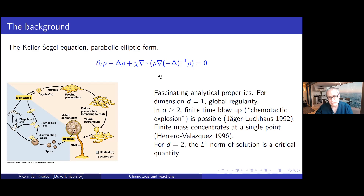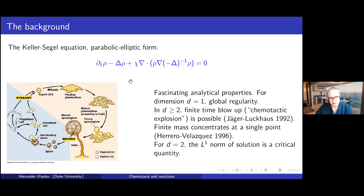If you integrate and use the divergence theorem you get the surface integral, controlled by the normal derivative of the chemical. This models certain classes of mold: during their life cycle, when they starve or decide to reproduce, they secrete a chemical, gather at high concentration, and form a stalk with spores on top that can fly and colonize new space.